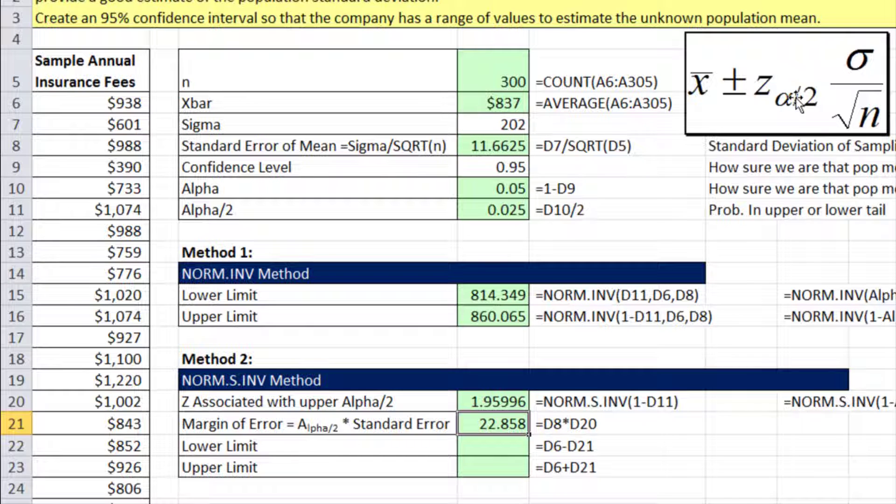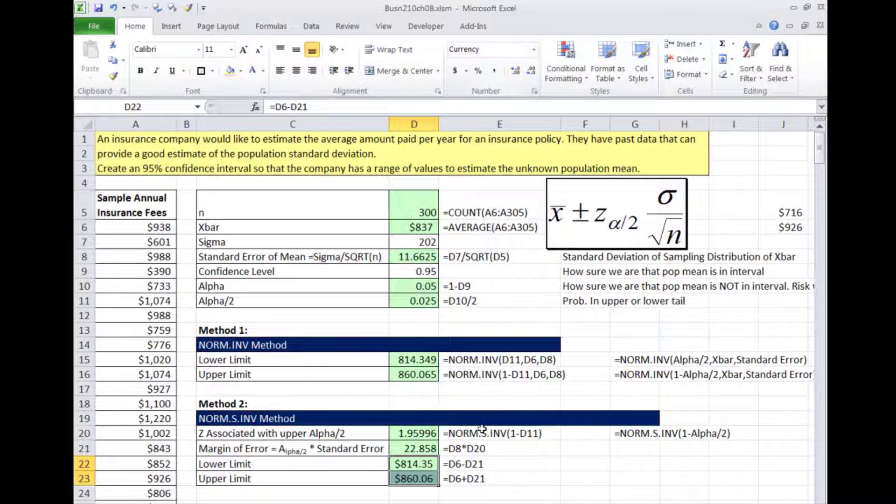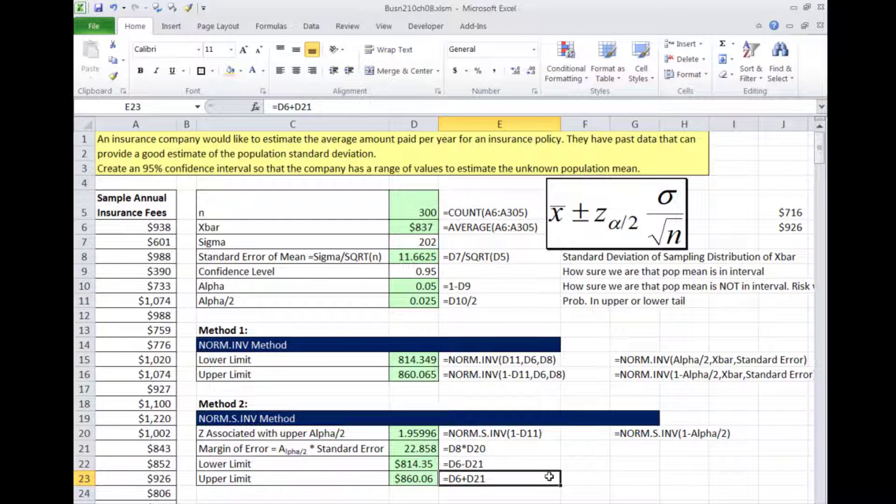Now we simply do the lower limit minus the margin of error. Then we take our upper plus the margin of error. So again, we have 814 and 860. Now I'm going to increase the decimals. These are the same numbers, just with different formatting. So method 1 and 2. For the class, I may ask you specifically to do one or the other. If I don't ask, you do whichever one you want.